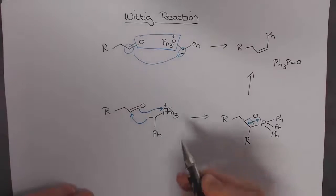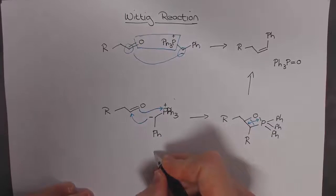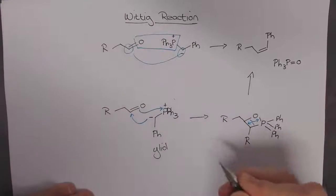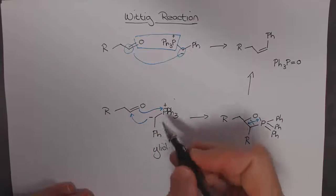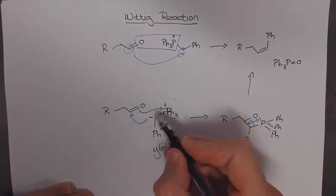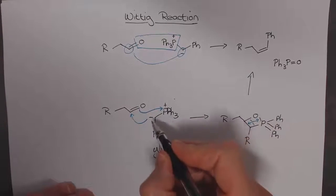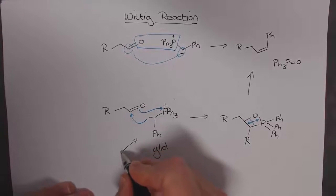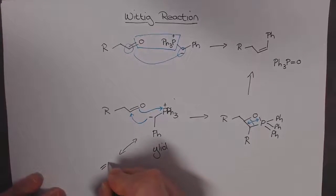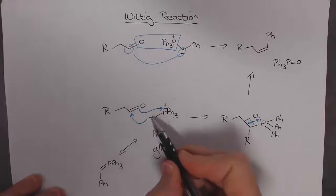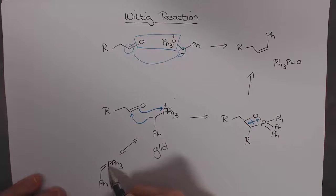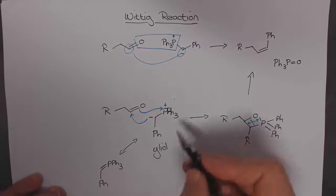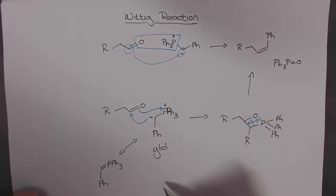A bit of nomenclature that's important is that this reagent is known as an ylid. An ylid means a compound that has a positive negative charge right next door to each other. But we can draw out the resonance form of this intermediate. The negative charge delocalizes in and forms a double bond to the phosphorous atom. So this is the resonance form, this is a phosphorane and this is the ylid which is the more important one we work with.